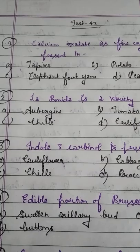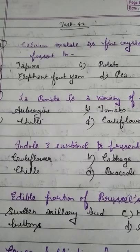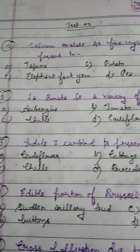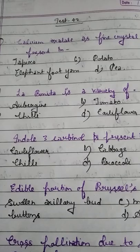Student, question number 1. Calcium oxalate as fine crystal is present in which of the following vegetables? Option A: Tapioca. Option B: Potato. Option C: Elephant foot yam.